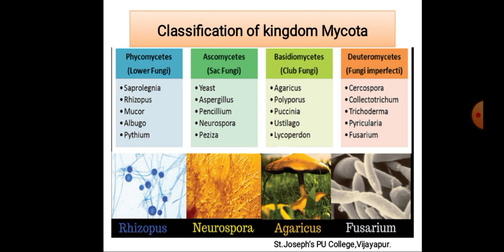Ascomycetes involve a unicellular fungus called yeast, and also filamentous forms like Aspergillus, Penicillium, Neurospora, and Peziza. Neurospora is mainly used in biochemical and genetic work.